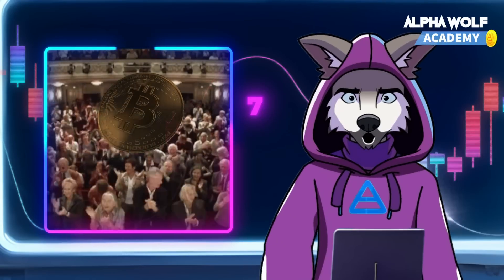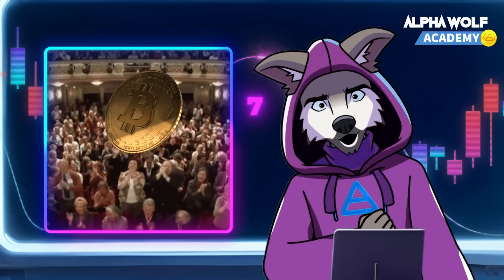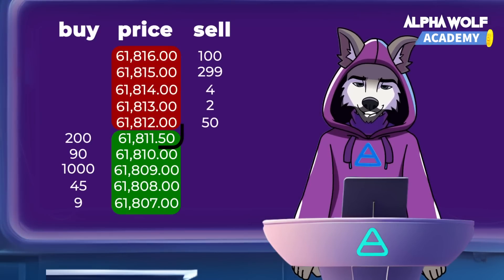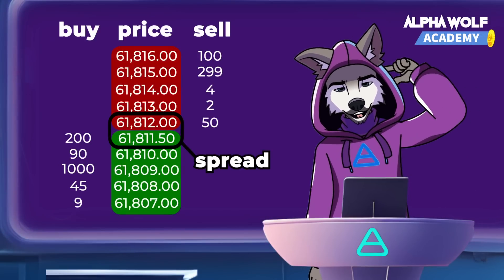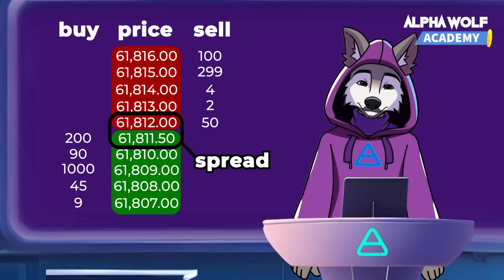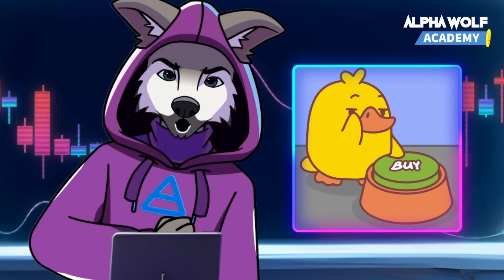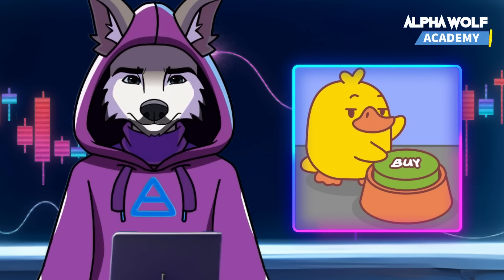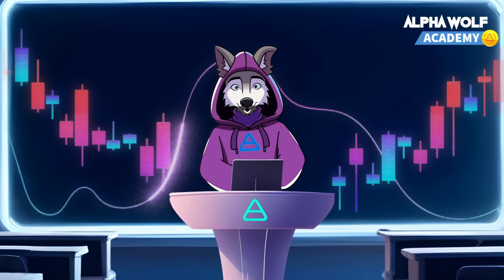In highly liquid markets, there are many active buyers and sellers. This results in a narrow spread, which is the difference between the highest price a buyer is willing to pay and the lowest price a seller will accept. This narrow spread allows transactions to occur close to the current market price.